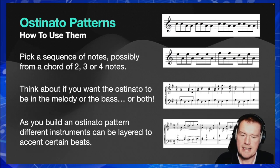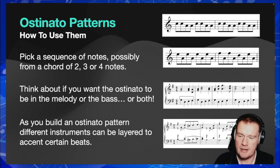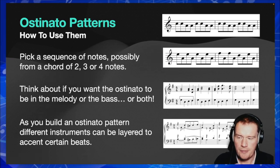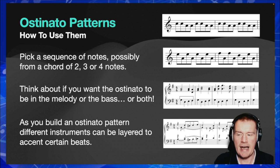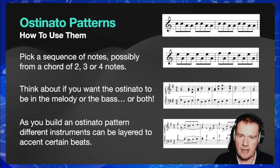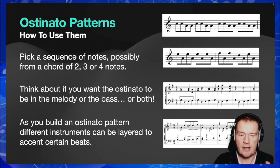As things become more complex and you want to introduce more harmony, you can layer different instruments to accent certain beats — they don't play the entire ostinato written in one instrument, they accent particular beats.